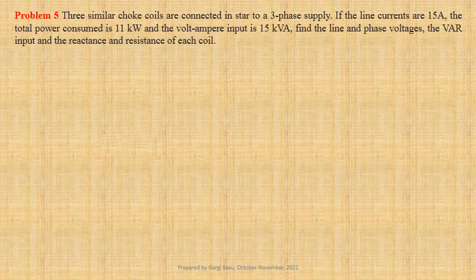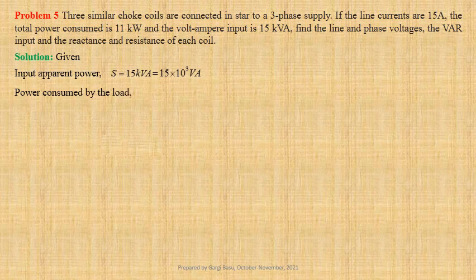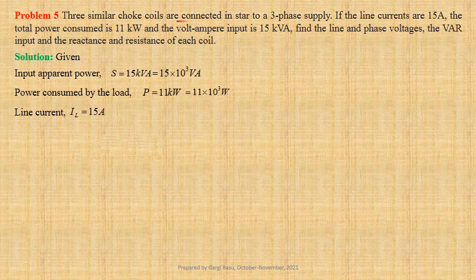Three similar choke coils are connected in star to a three-phase supply. If the line currents are 15 ampere, the total power consumed is 11 kilowatts and the total volt ampere input is 15 kVA. We have to calculate the line and phase voltages, the volt ampere reactive input and the reactance and resistance of each coil. Given data: input apparent power S equals 15 kVA, power consumed P equals 11 kilowatts, line current IL equals 15 ampere. Since the coils are star connected, IL equals phase current I_phase.